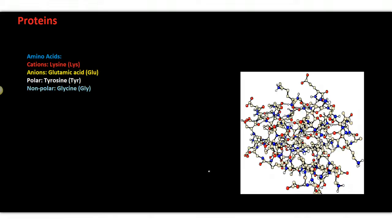Here I have some examples. Lysine is an example of a cation with a positive charge. Glutamic acid is an example of an amino acid that is an anion with a negative charge. Tyrosine is an example of a neutral charged molecule that has a positive end and a negative end, or a polar molecule.